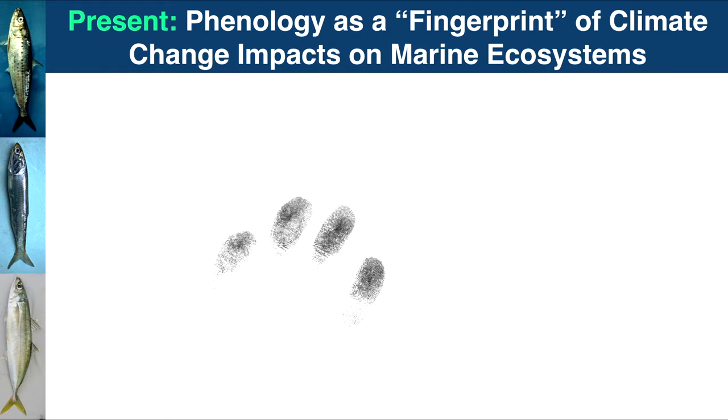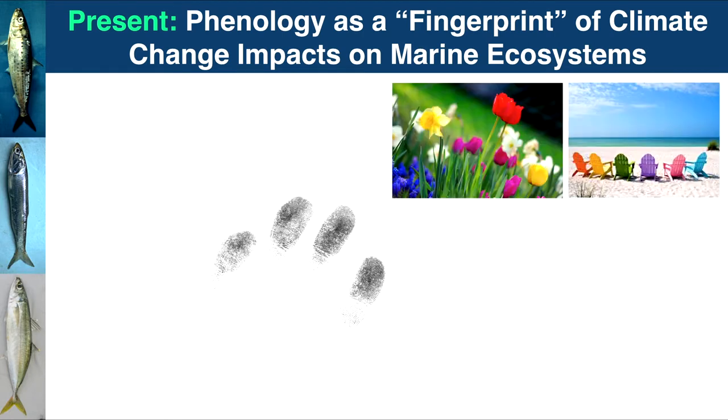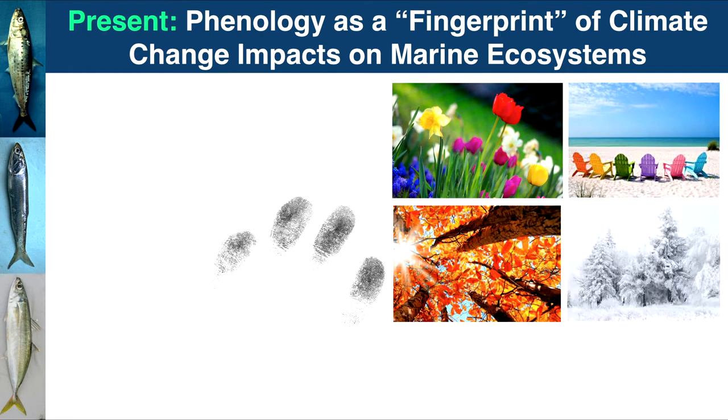Moving into the present, phenology is often considered a fingerprint of climate change and its impacts on marine ecosystems. What do I mean by a fingerprint? We know that phenology is going to change as the world warms in a predictable manner. So we can see if those changes are actually happening and check if they match our expectations — earlier springs, longer summers, later falls, and shorter winters.